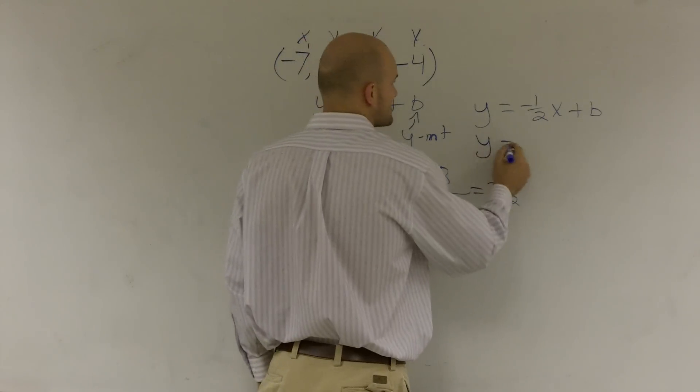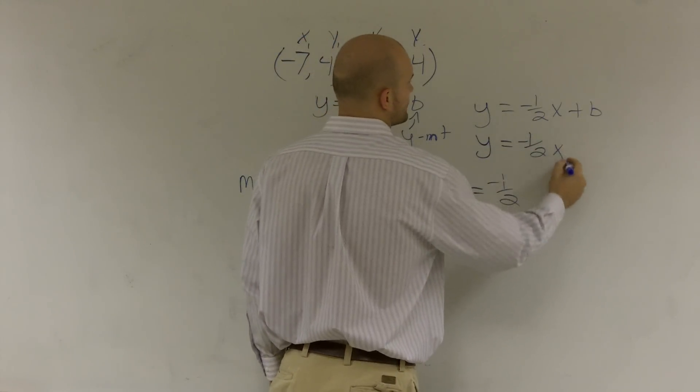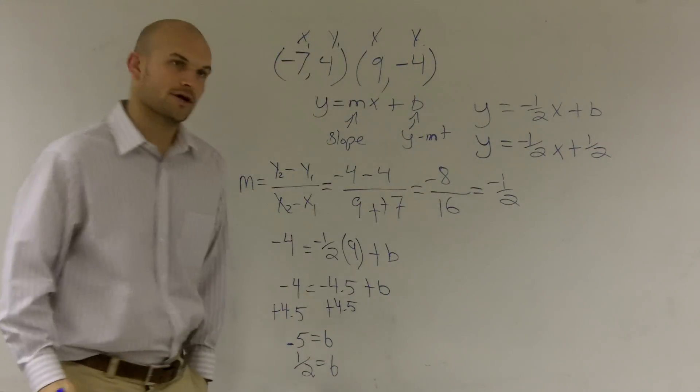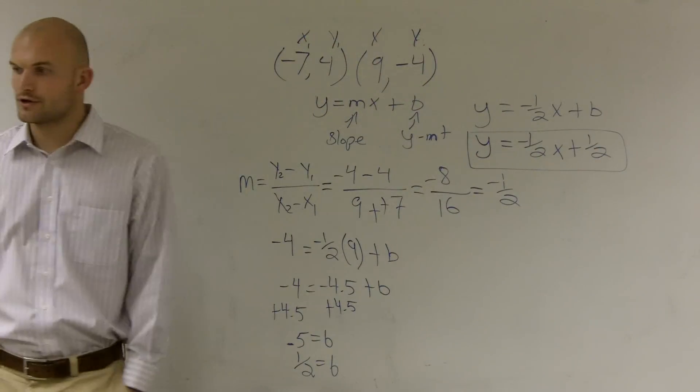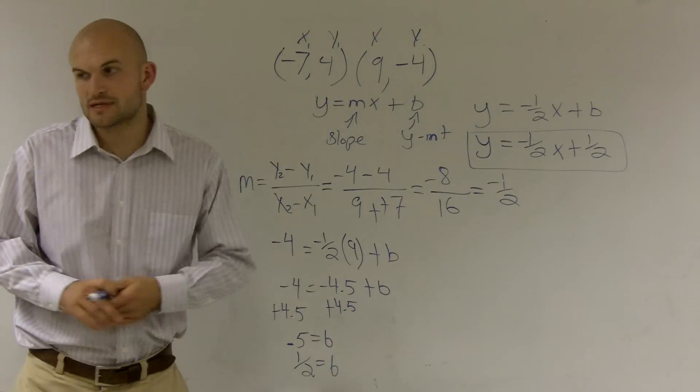So now I just add that information to my equation. And there you go. Now I've figured out the formula or the equation of my line, given two points, using slope intercept form.